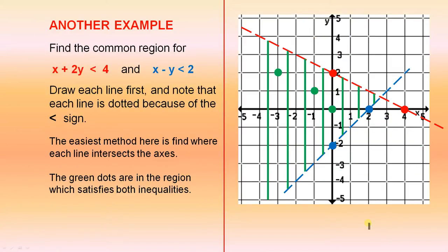Another example. Find the common region for x plus 2y is less than 4 and x minus y is less than 2. Draw each line first and note that each line is dotted because of the less than sign. That is the case for each inequality. The easiest method here is to find where each line intersects the axes.